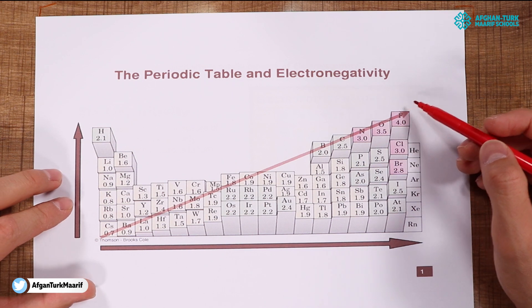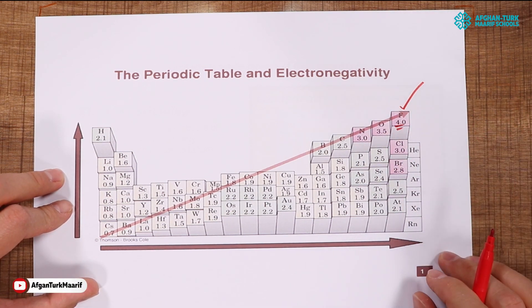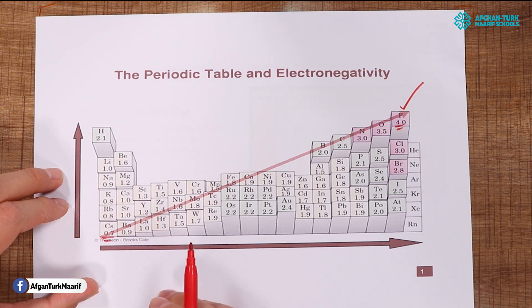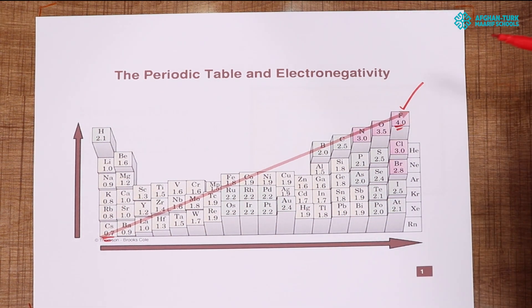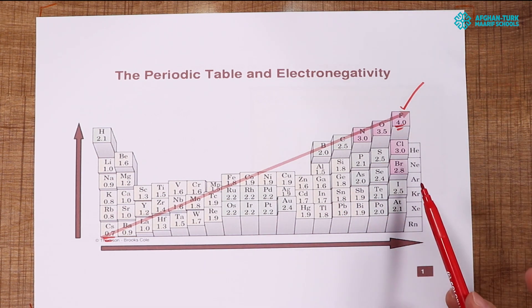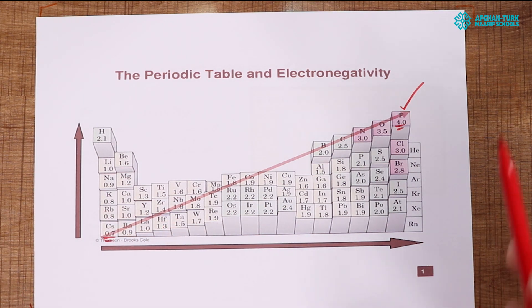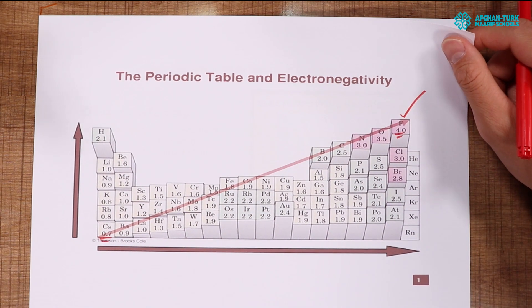Fluorine is the most electronegative element with a value of 4.0, and cesium is the least electronegative element with a value of 0.7. If francium were included, we could also call it the most electropositive or least electronegative element. So you can see the trend: going higher increases electronegativity, and going from left to right also increases electronegativity, or vice versa.